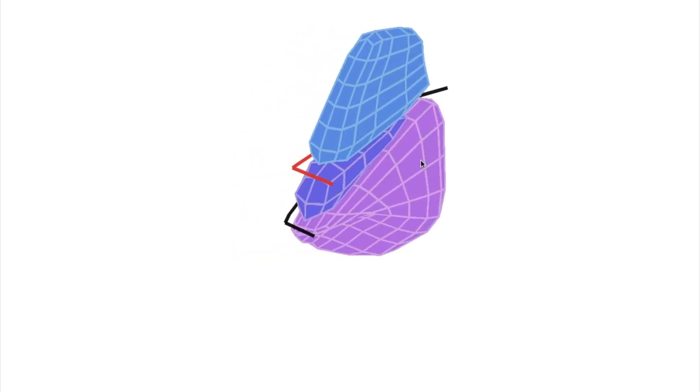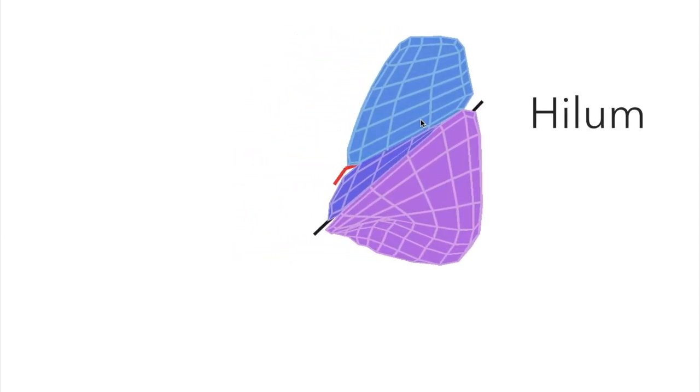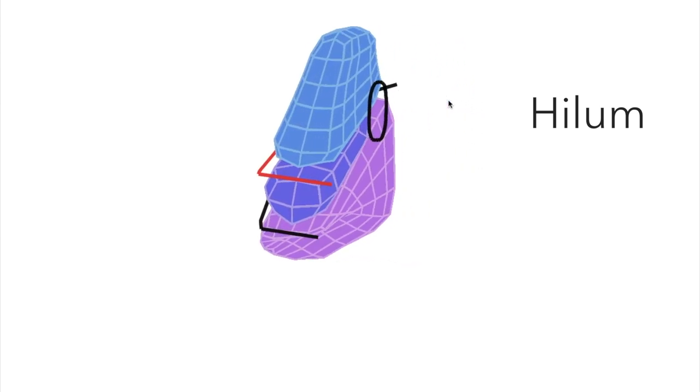I should mention that around this side, they all end up back at the hilum of the lung, which is roughly this area here, where all the vessels and the bronchi plug in.